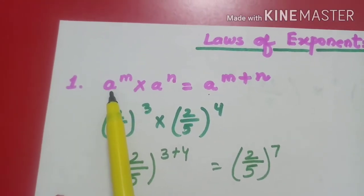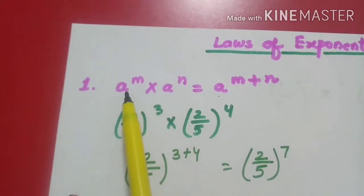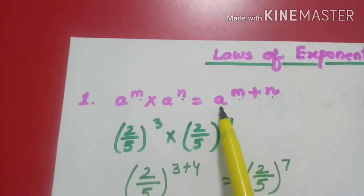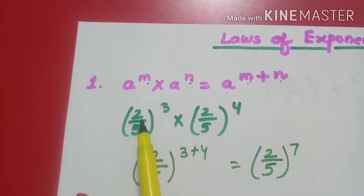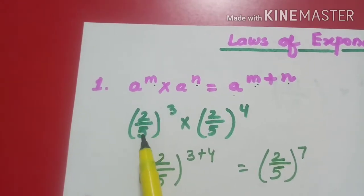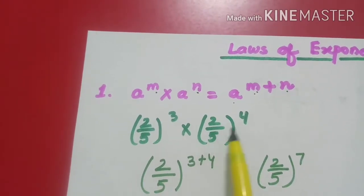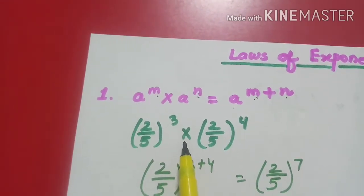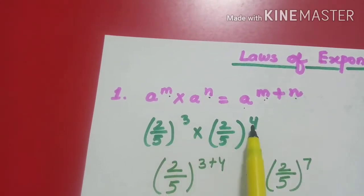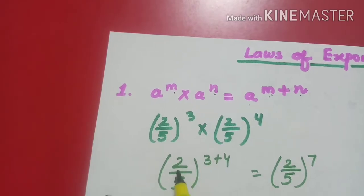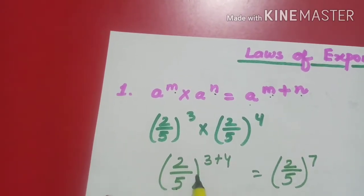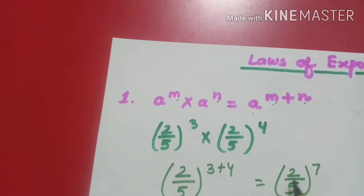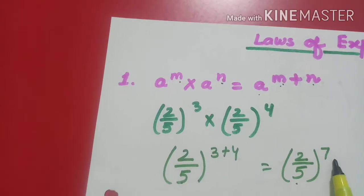The first law says when we multiply two numbers with the same base and different powers, we add the powers with the same base. Let's see one example. I have two numbers: (2/5)³ and (2/5)⁴, and I'm going to multiply them. Since the base is the same (2/5), the powers get added: 3 + 4. So it becomes (2/5)⁷.